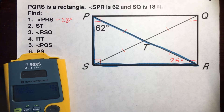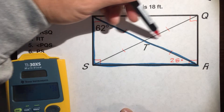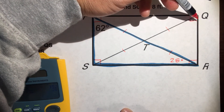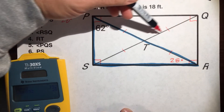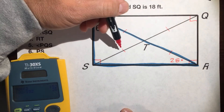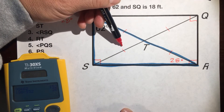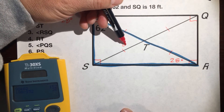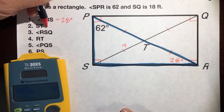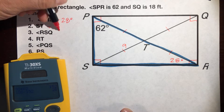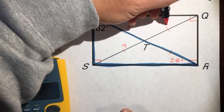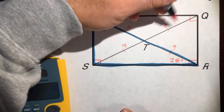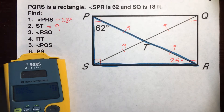What is the length of ST? We know the entire diagonal SQ is 18 feet, and we know this diagonal bisects the other. So this half of the diagonal has to be 9, because half of 18 is 9. And coincidentally, all four halves are 9 because we know all four halves are congruent.